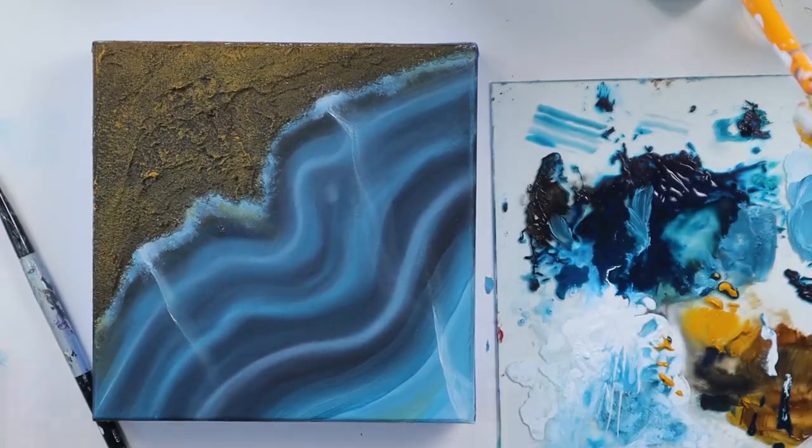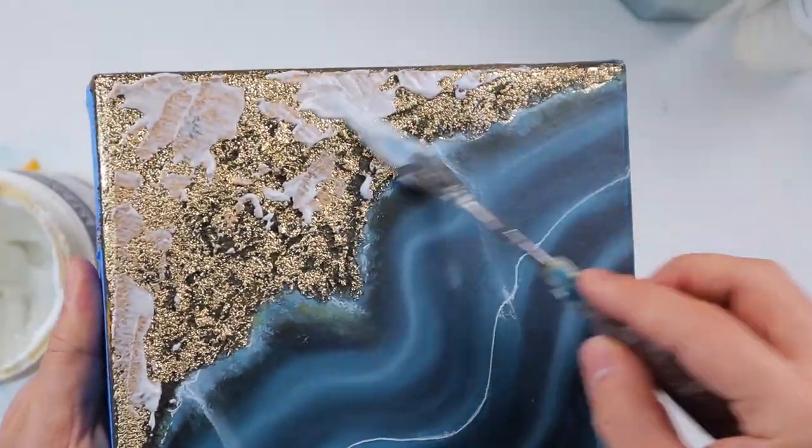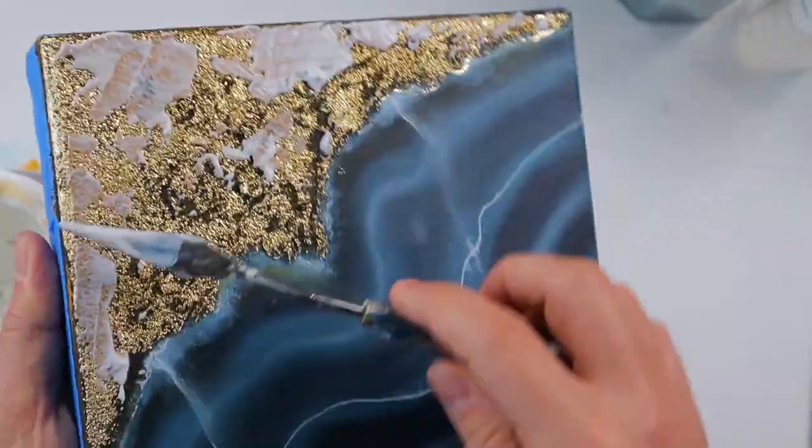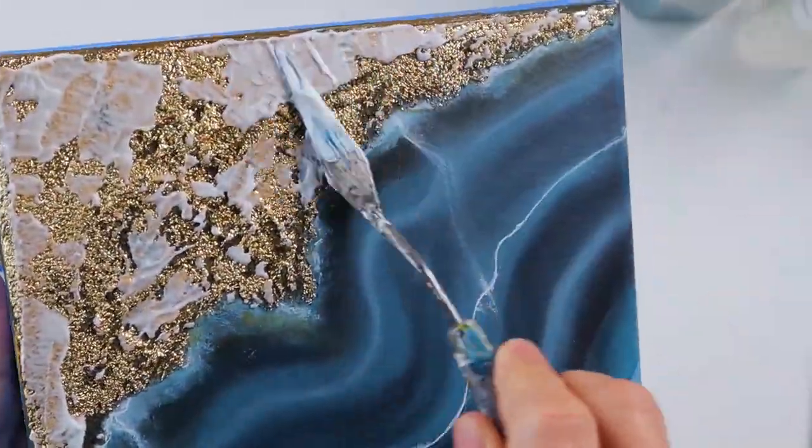Here I've already put my gold leaves on the modeling paste. Now I'm adding a little bit more modeling paste but this time a smooth one with no sand in it.